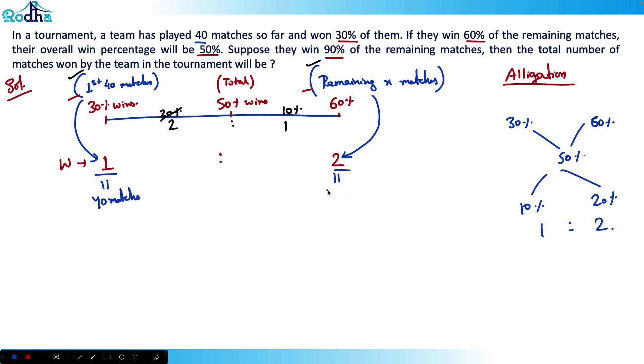That basically means that 2 will represent 80 matches here. So that means the remaining are 80 matches. The team wins 90% of the remaining matches, so 90% will be how much?